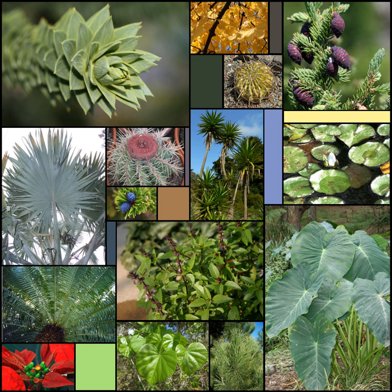Leaves can also store food and water, and are modified accordingly to meet these functions, for example in the leaves of succulent plants and in bulb scales. The concentration of photosynthetic structures in leaves requires that they be richer in protein, minerals, and sugars than woody stem tissues. Accordingly, leaves are prominent in the diet of many animals.